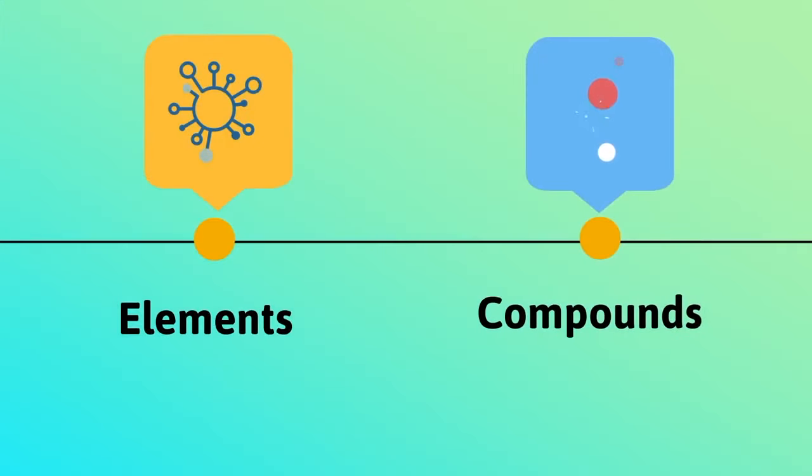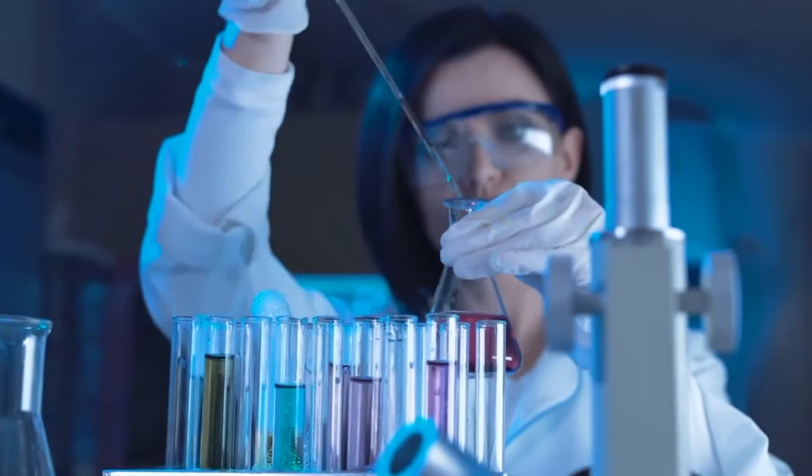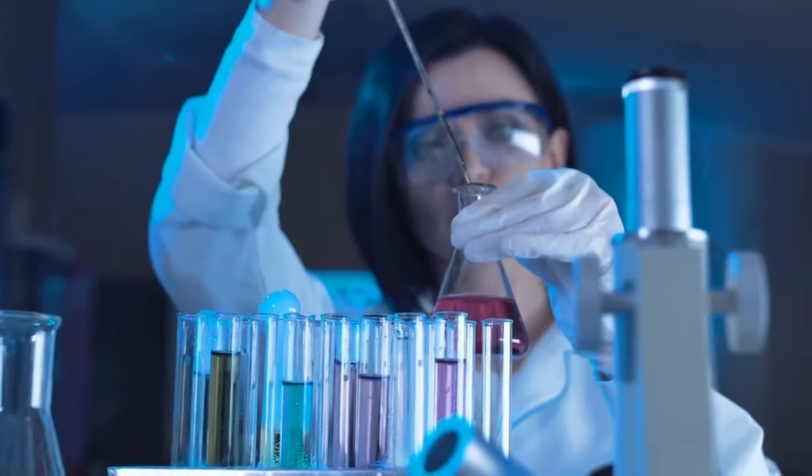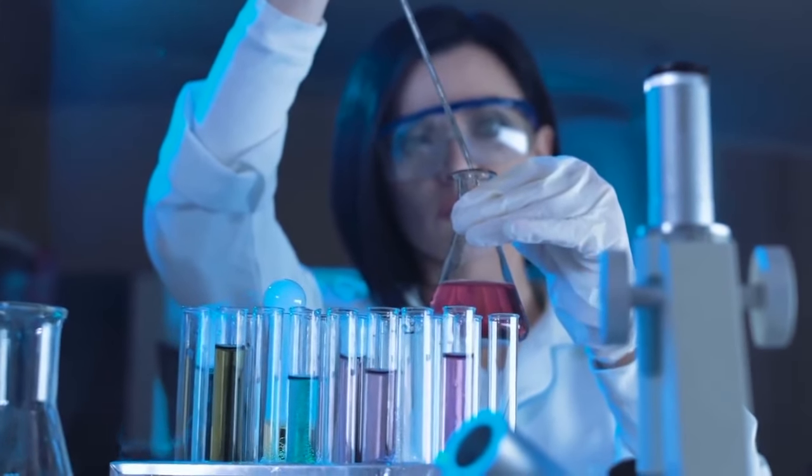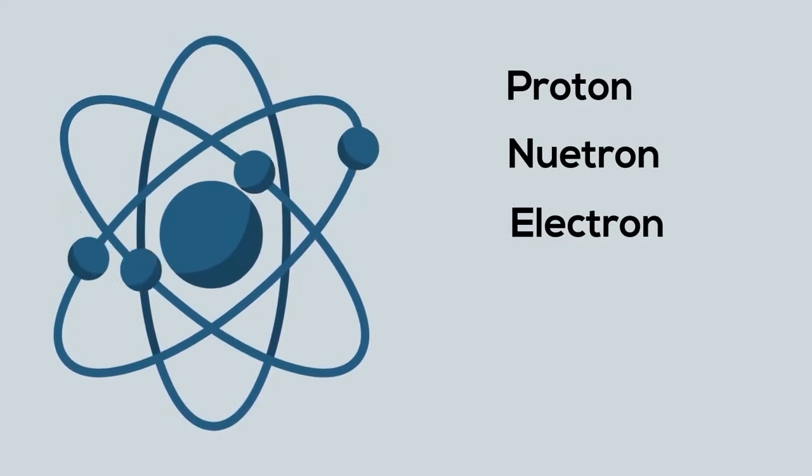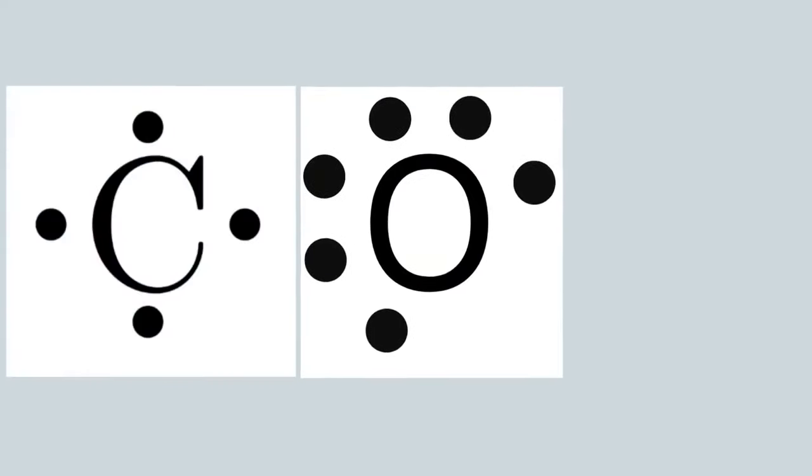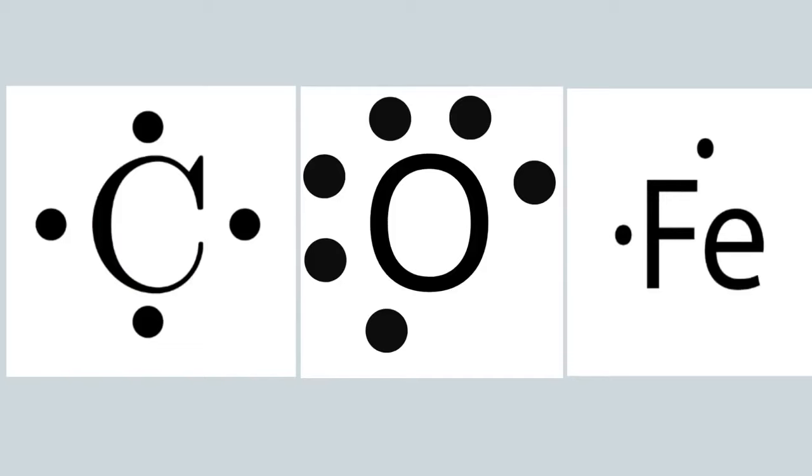An element is a pure substance. In other words, an element cannot be broken down into a simpler substance by physical or chemical means. An element is made up of only one type of atom. An atom consists of a proton, neutron, and an electron. Some common examples of elements would be carbon, oxygen, or iron.